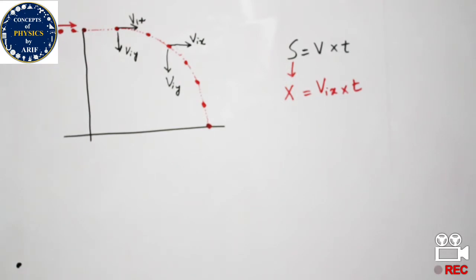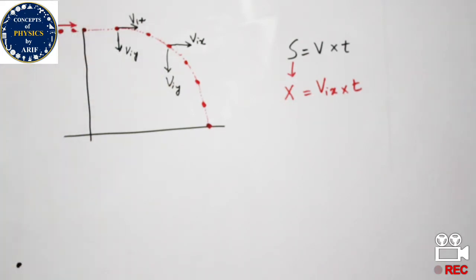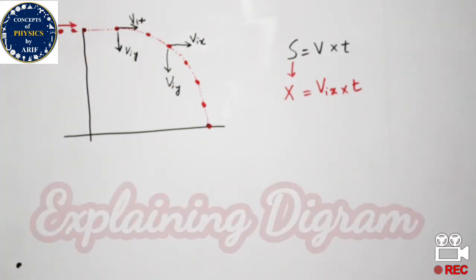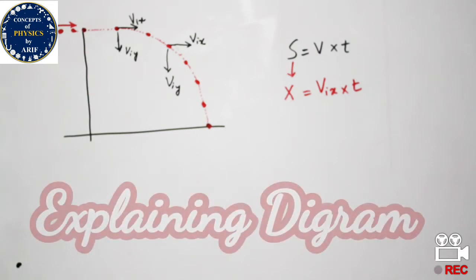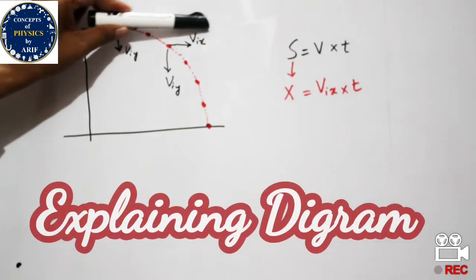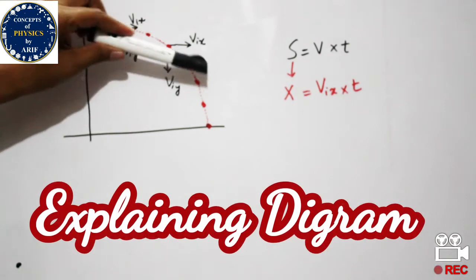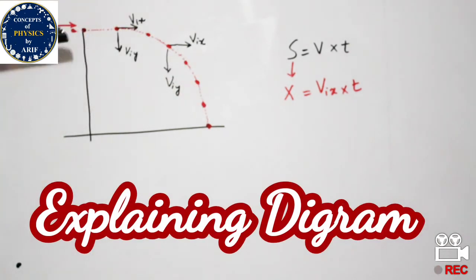We can further discuss about projectile motion by explaining some diagrams. First of all we need to consider that when a ball is horizontally placed, moved, or hit from some height,